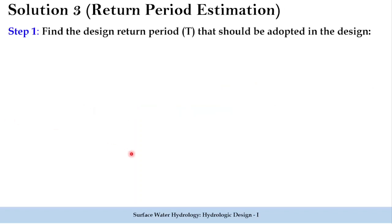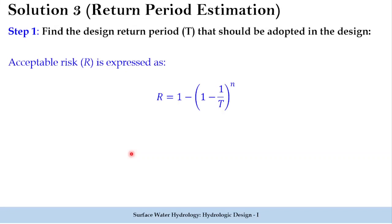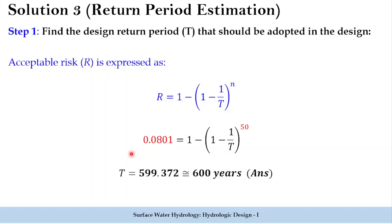Using the equation for acceptable risk R equals 1 minus (1 minus 1/T)^n — risk is 1 minus reliability. The risk R is 8.01 percent, written as 0.0801. Setting up: 0.0801 equals 1 minus (1 minus 1/T)^50, where T is the unknown return period. Solving this gives approximately 599, equivalent to 600 years as the return period to adopt.